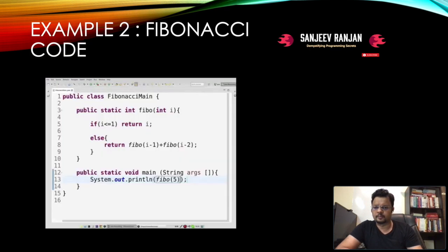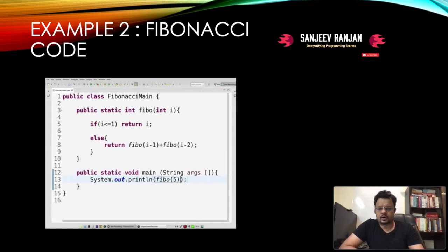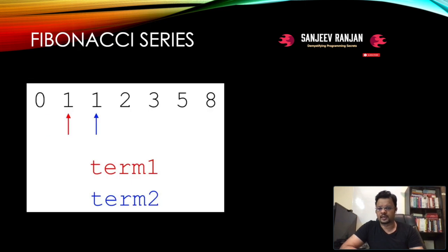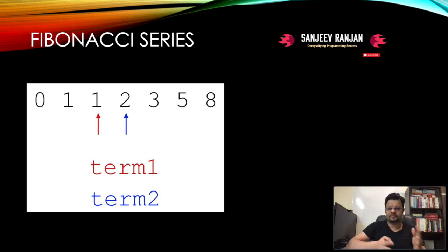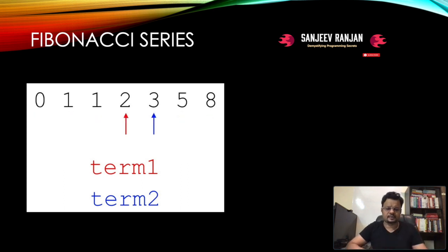Now let's look at one more example: the Fibonacci series. In Fibonacci, you start with zero and one, and keep adding the previous two numbers to get the next. Each term has a recursive call that calculates the next term in the series. It keeps on growing — this is basically an infinite series and a classic example of a recursive solution.